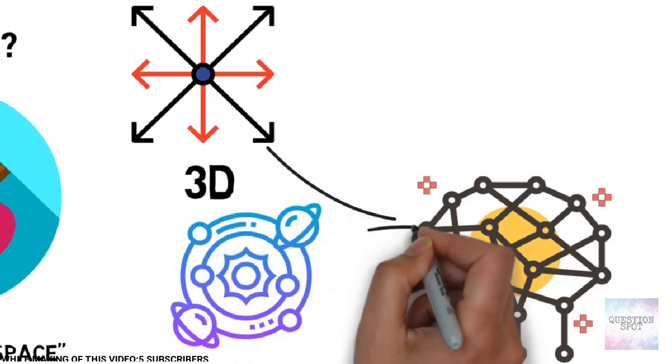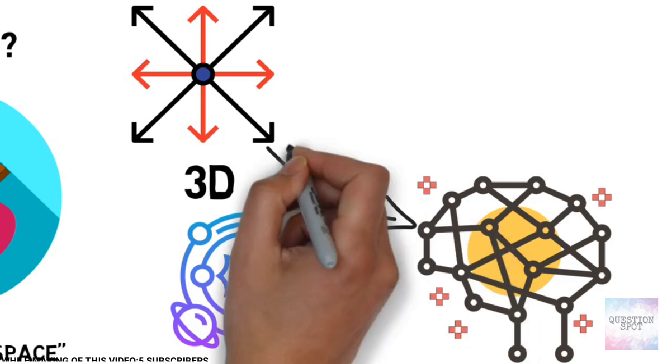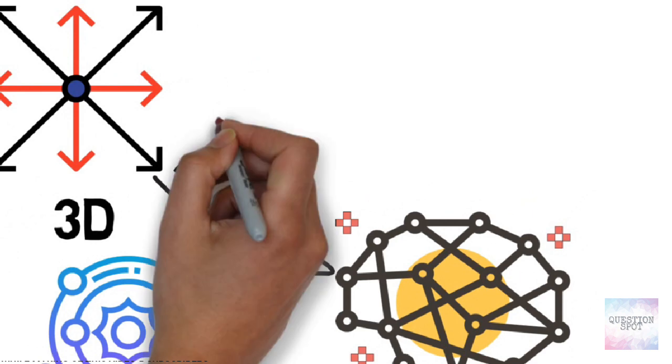If these extra dimensions exist and if gravity is able to leak into them, it could explain why gravity seems so weak to us.